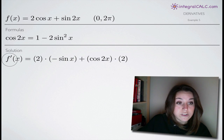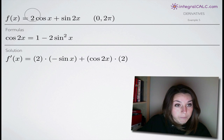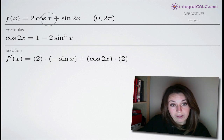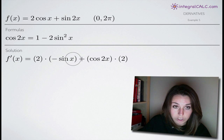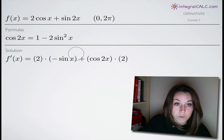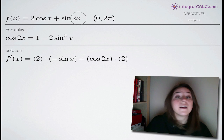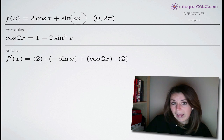The first thing that we're going to do is go ahead and take the derivative. Going term by term, I bring my 2 — that's the coefficient on the cosine term — straight down, and then I'm going to multiply by the derivative of cosine of x, which is negative sine of x. I put that down here in my derivative function. Then for the sine of 2x term, we're going to need to use chain rule because 2x is more complicated than simply an x.